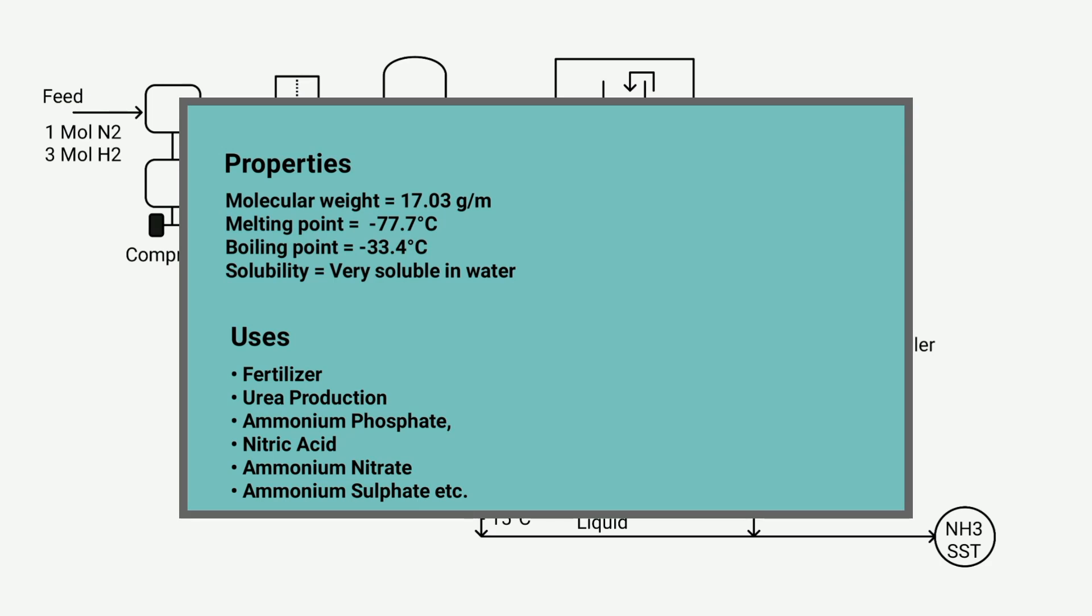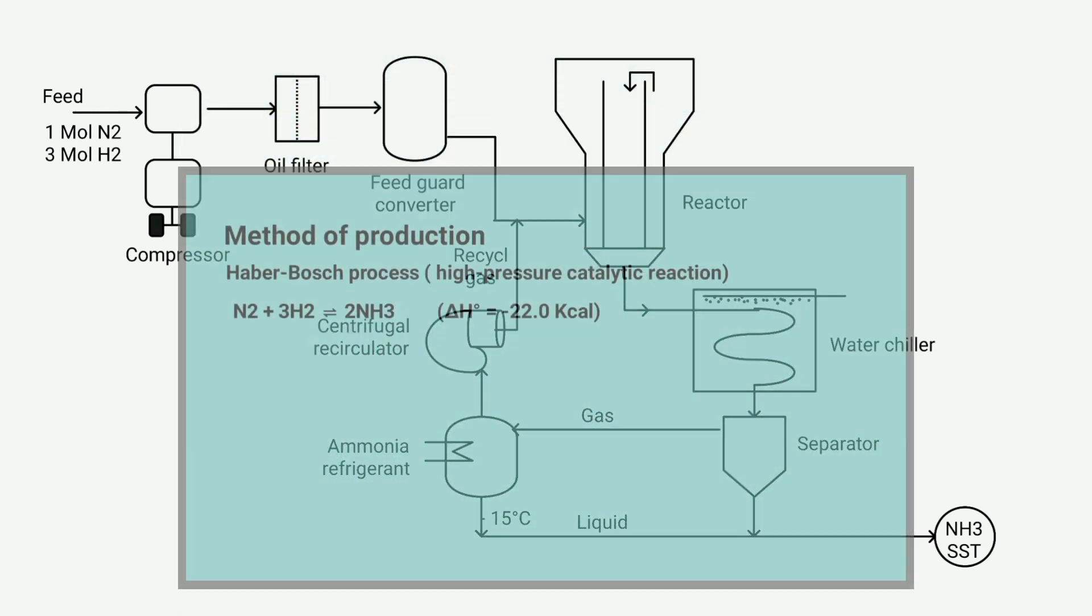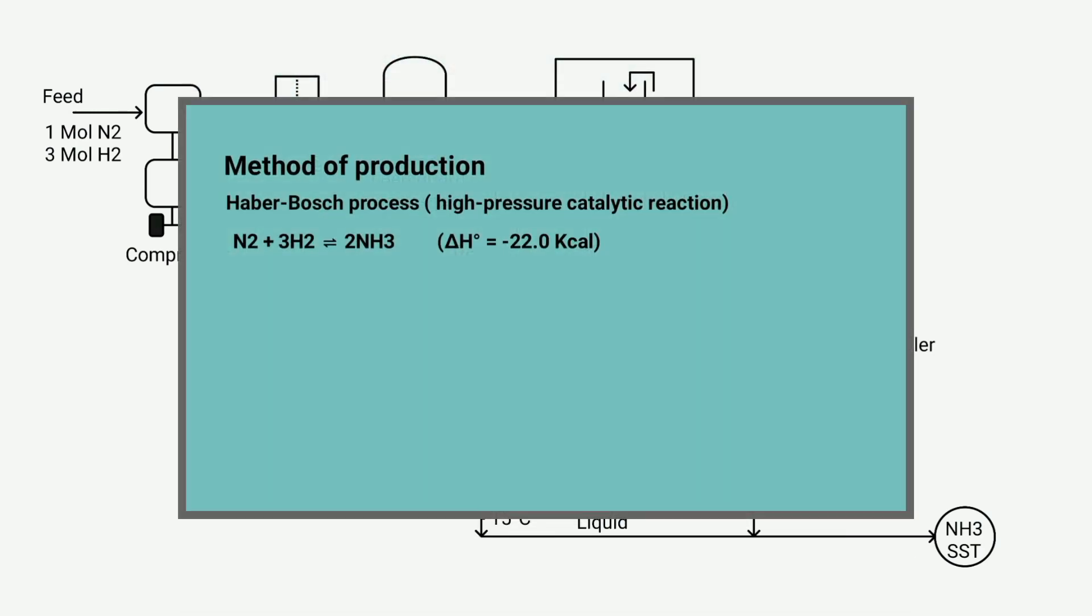If we talk about the methods of production, ammonia is commonly produced through a process called the Haber-Bosch process, which involves a high-pressure catalytic reaction between nitrogen and hydrogen gases. The main reaction that occurs in this process is N2 plus 3H2 ⇌ 2NH3. This reaction represents the synthesis of ammonia from nitrogen and hydrogen molecules. This reaction is exothermic in nature, and to make ammonia, mainly hydrogen and nitrogen are required.